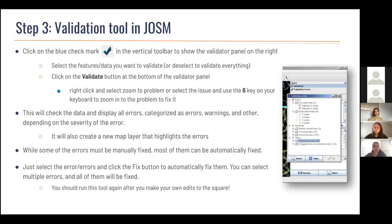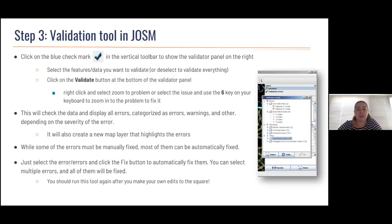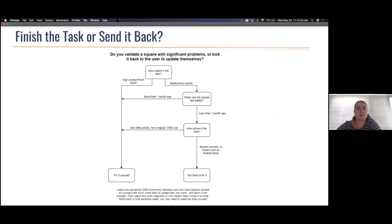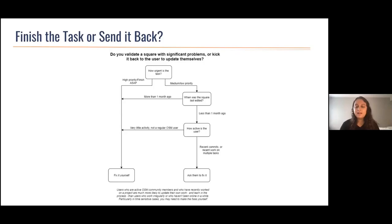JOSM is a great validation tool. It allows for offline editing of OpenStreetMap and is more powerful than the editor within the task manager with more features. When you first enter JOSM, most validators start by clicking the blue checkmark — the validation tool. It will select the features you want to validate, check all the data, and display errors categorized as errors, warnings, and other, depending on severity. It will highlight problem features if there are any. You can double-click on a specific feature, right-click and select zoom to problem, or use the 6 key to zoom in and fix it. While some errors must be fixed manually, most can be fixed automatically by selecting the error and clicking the fix button. After making edits, run the validation tool again to double-check your work.